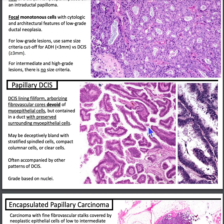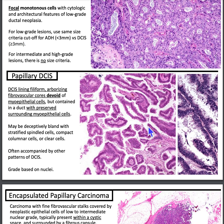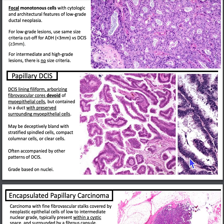Papillary DCIS is often accompanied by other patterns of DCIS, and the grade is based on the nuclei. Comparing photos, lower-grade lesions appear different from higher-grade ones with larger nuclear-to-cytoplasmic ratios.